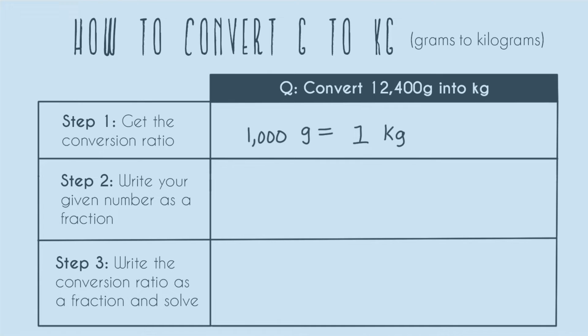Step two, write your given number, the number in the problem, as a fraction. And so we can see that our given number is 12,400. And we're going to use our math knowledge to turn it into a fraction, even though it's not written as one. So if you just have a number and it's not written as a fraction, you can always make it one by just adding a fraction bar and adding a denominator of one. This is equal to any just regular number. And no matter how your number looks, even if it's a decimal already or really small or really big, all numbers can be turned into fractions like this.